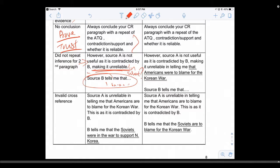Look at the example here: 'However, Source A is not useful as it is contradicted by B, making it unreliable in telling me that Americans were to be blamed for the Korean War.' Then you can state the contradiction. 'B tells me that the Soviets were to blame for the Korean War.'